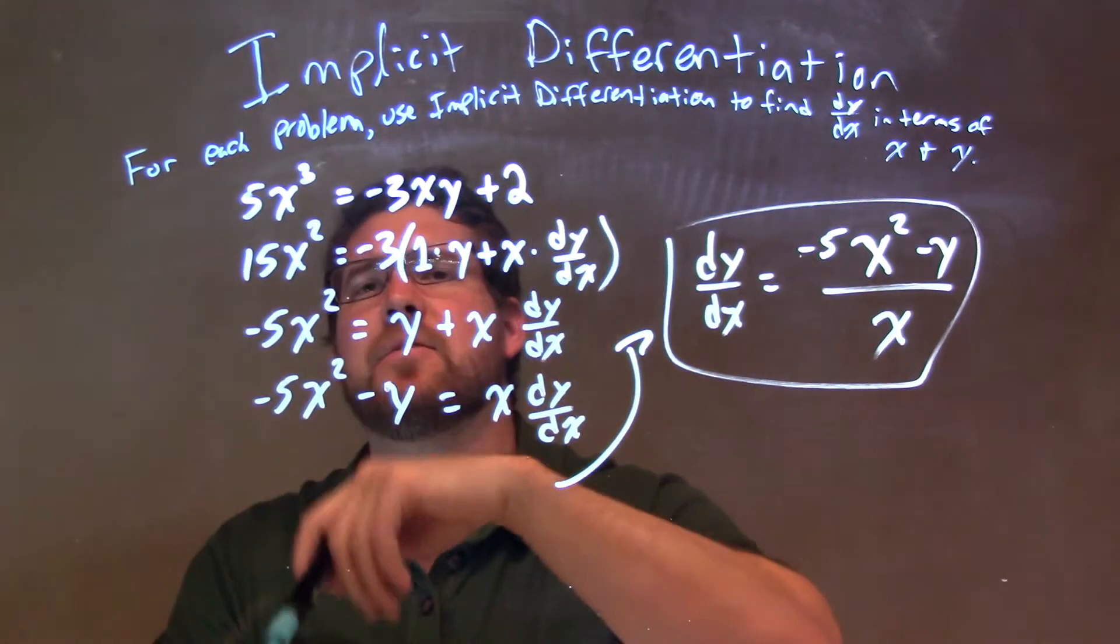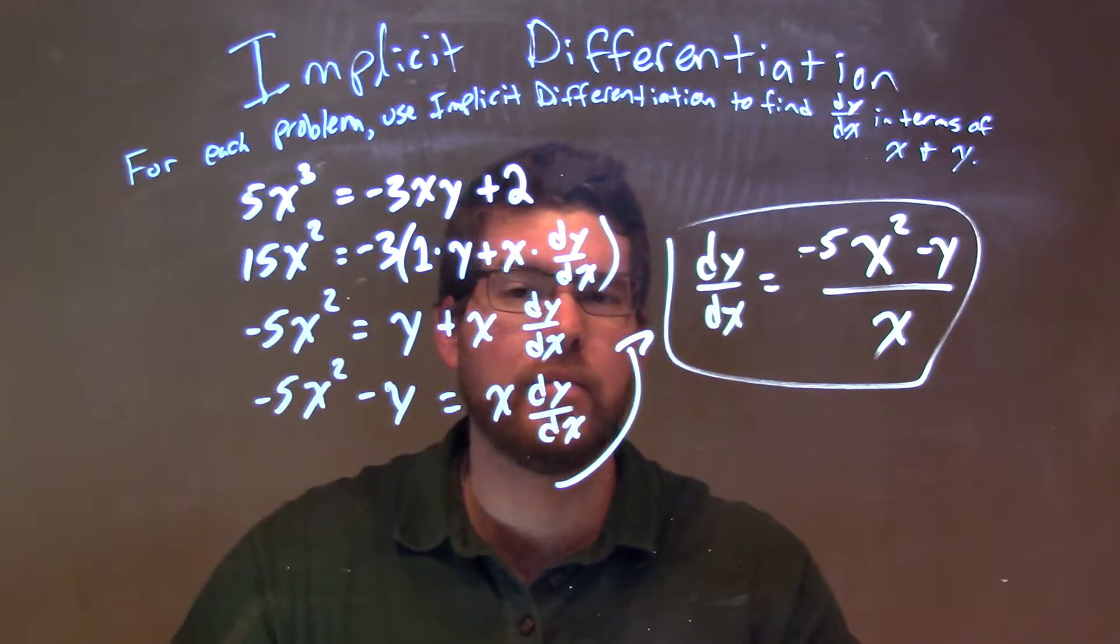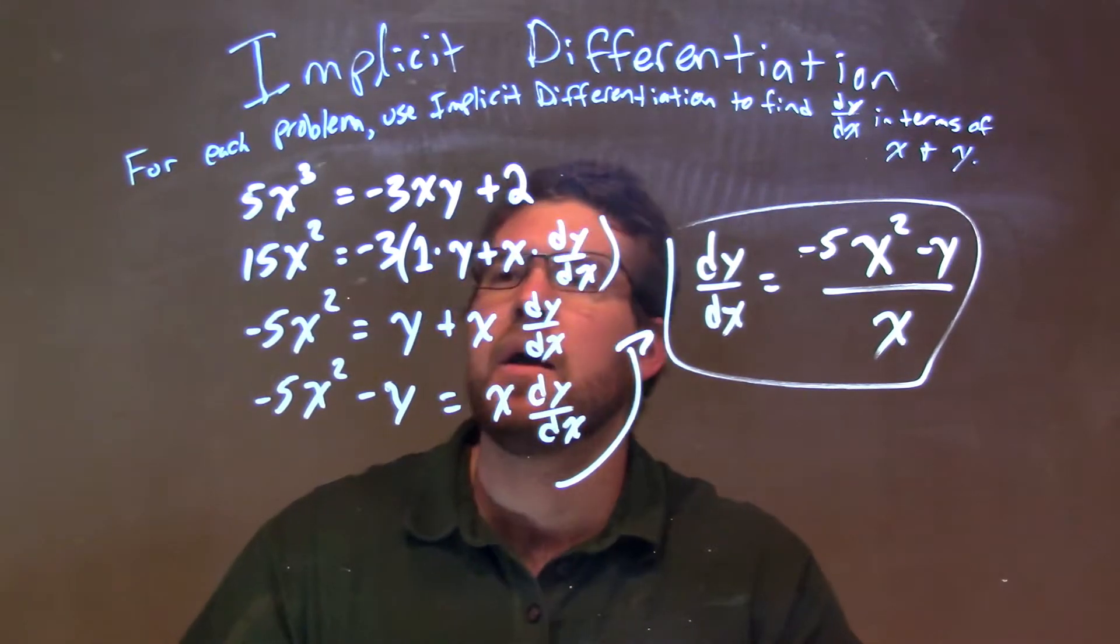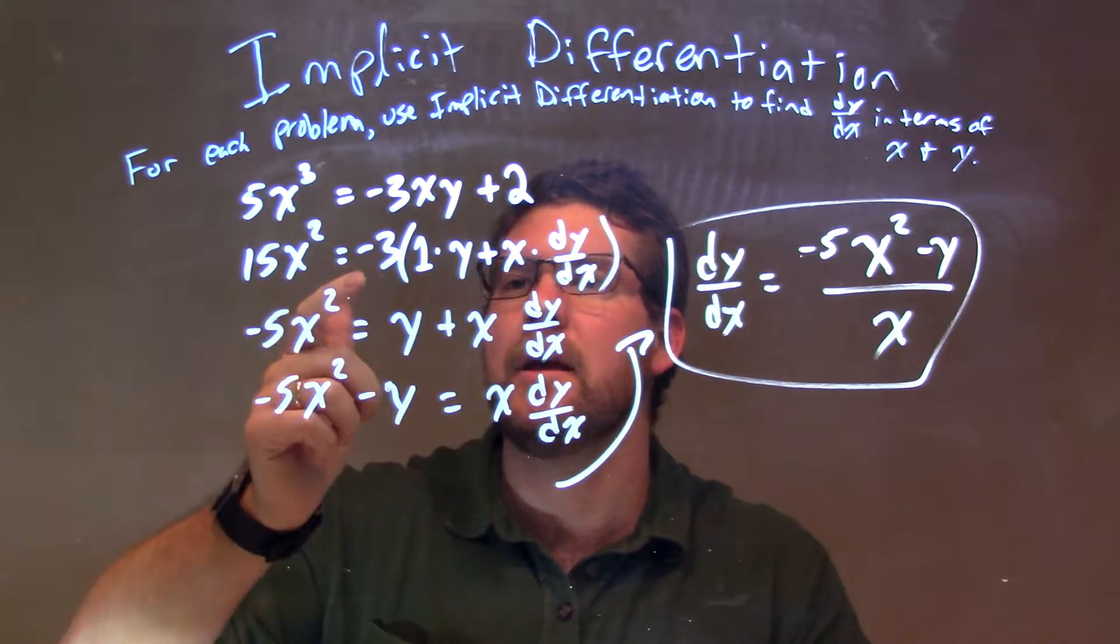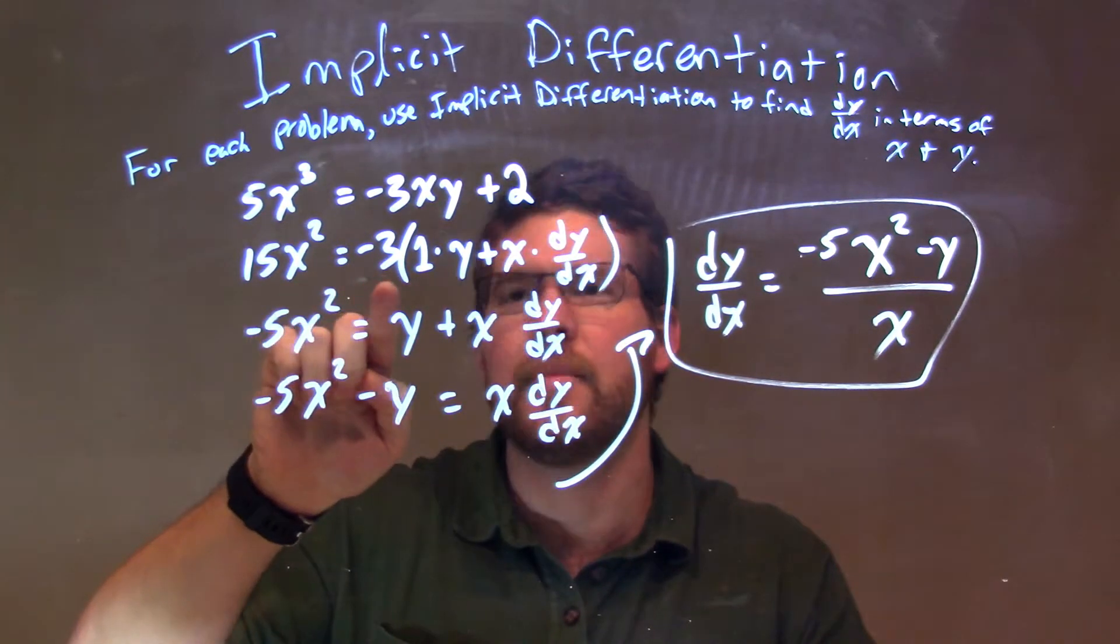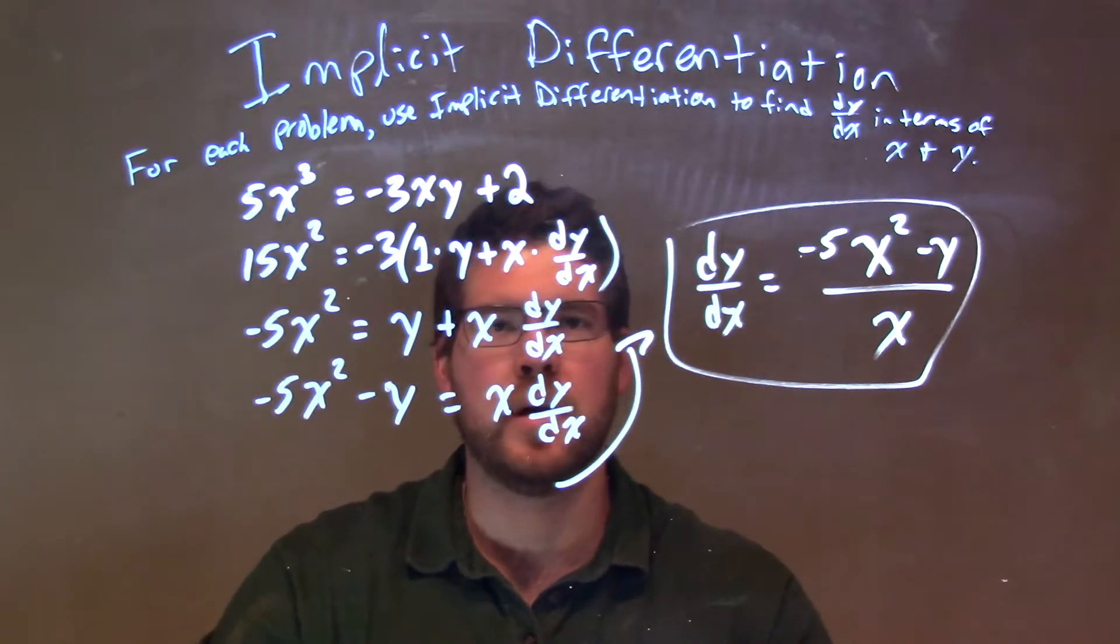So, let's recap. We're given 5x to the third equals negative 3xy plus 2. Using implicit differentiation, I derive both halves, giving me 15x squared equals, and I pull the negative 3, that constant out, times 1 times y plus x times dy/dx.